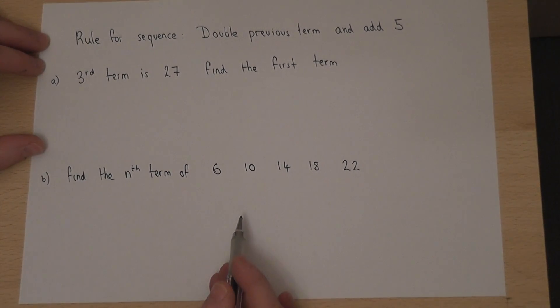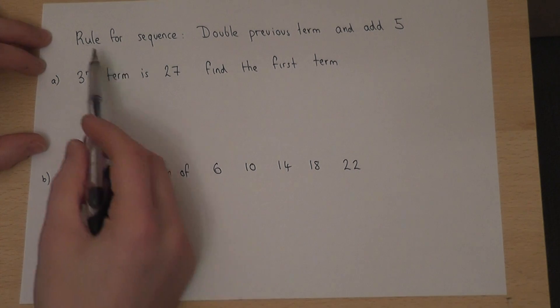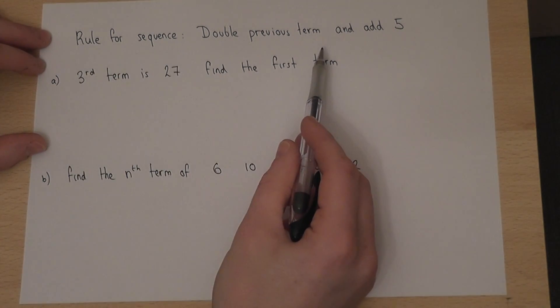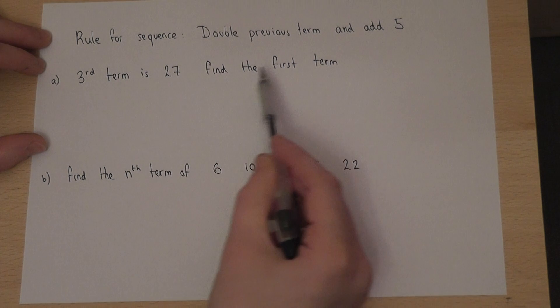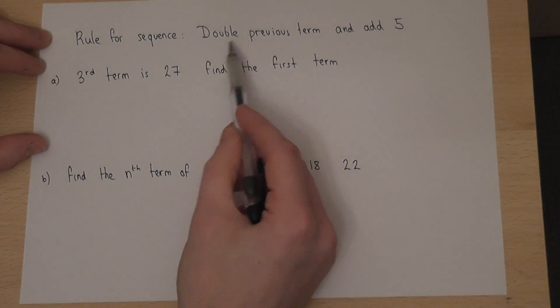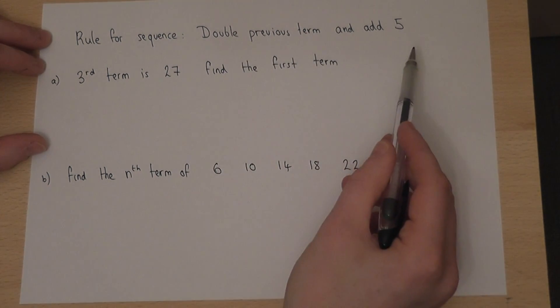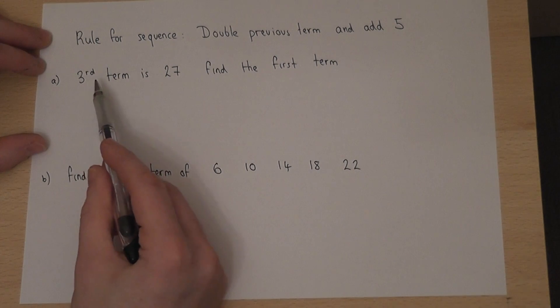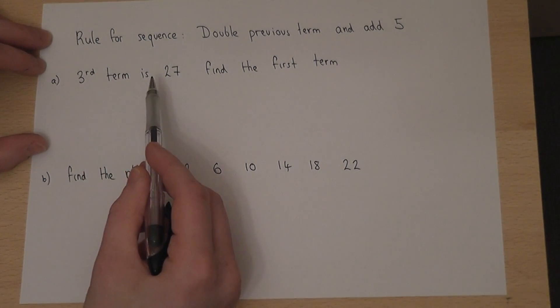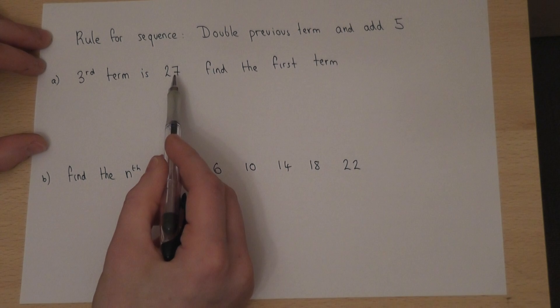This video looks at two examples of a sequence-style question. In the first part, we're told a rule for a sequence, which is to get from one term to the next, we double the previous term and add 5. So we know the third term. Now, to get to the fourth term, for example, we would double 27 and then add 5.